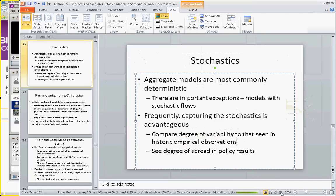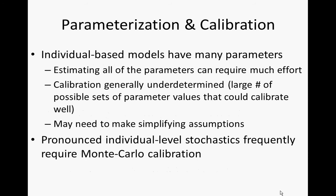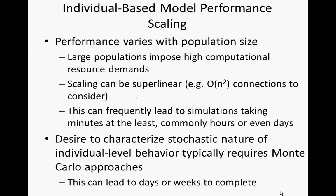Individual-based models have many parameters, and estimating all of them can require a lot of effort — we'll be talking about calibrating these models probably next week. For an individual-based model, performance varies with population size. Double the population and you at least double the running time. Why might the running time go up more than double? A lot of it has to do with memory hierarchy issues. Your computer stores information at different places, some of which are much faster to access than others — like having phone numbers in your head versus looking them up online.